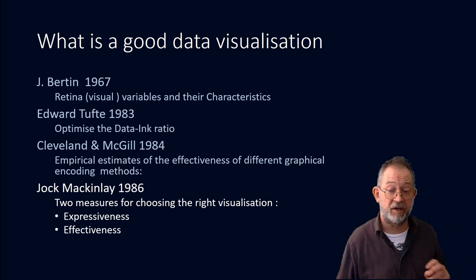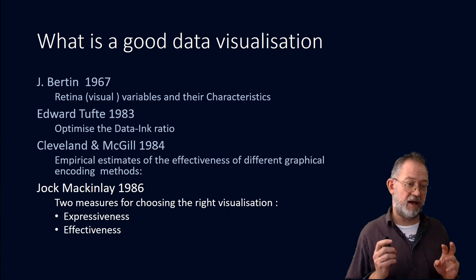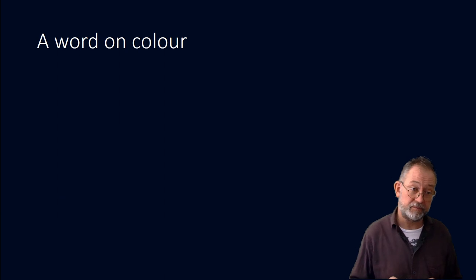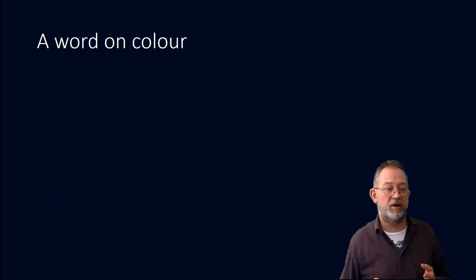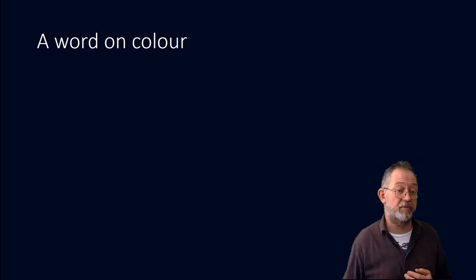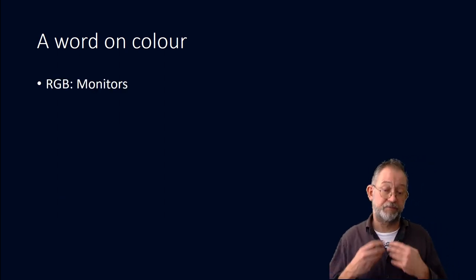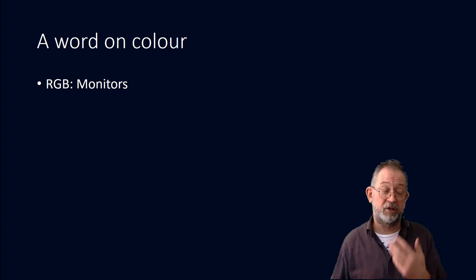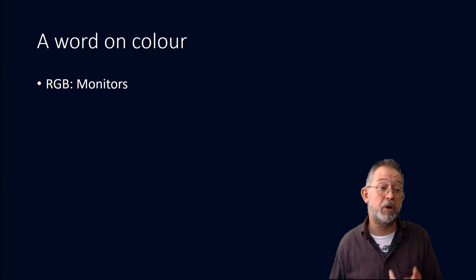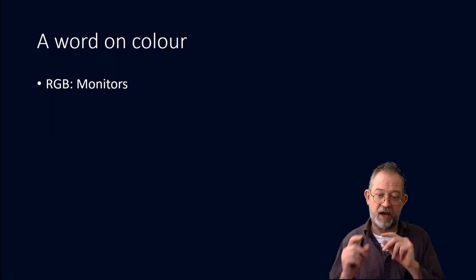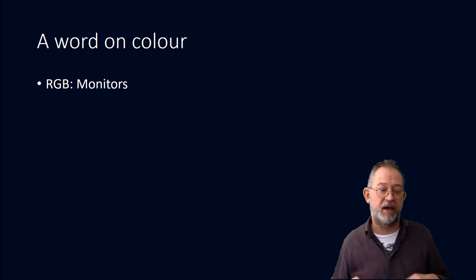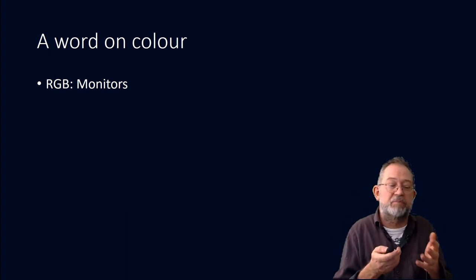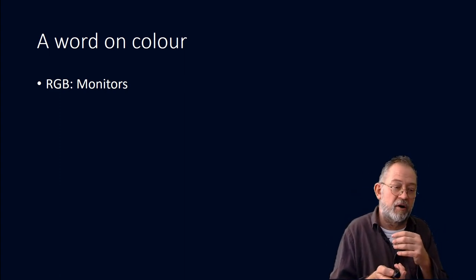Before we continue, we need to take a short detour and talk about color. Color can be described in many ways. On a computer monitor, we typically use RGB — red, green, and blue — so we have three channels that we use to present colors on the monitor.